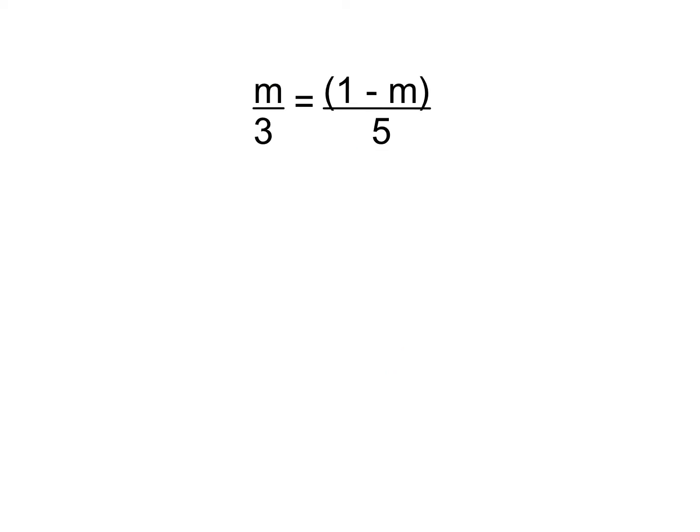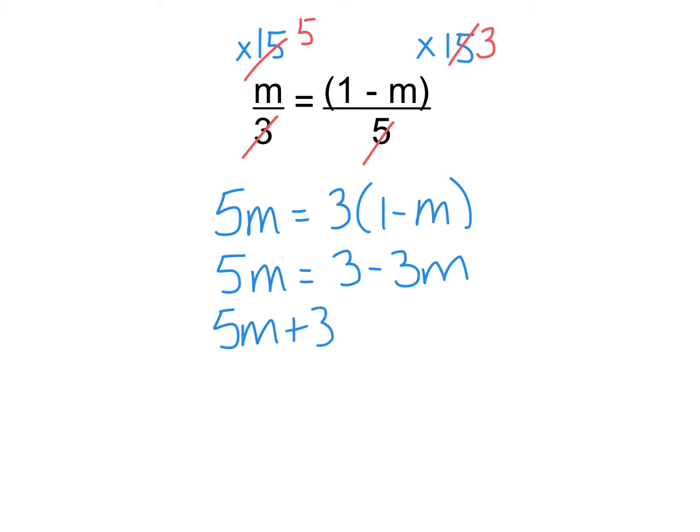Third example is similar, but this time it's a fraction equals a fraction. So again, let's find a number we can multiply by that will get rid of the fractions. There is another method on this one which I'll show you once I've done the continued method of eliminating the fractions. So three and five, lowest common multiple is 15. So I'm going to times this side by 15 and this side by 15. Now 15 and the three will cancel out, leaving a five. The 15 and the five will cancel out, leaving a three here. So I'm left with five m on the left and three bracket one minus m on the right. If I times that out, I have five m equals three minus three m. Let's bring the three m over. So I've got five m plus three m equals three. Eight m equals three, which doesn't divide nicely. So we leave it as three divided by eight or three over eight.